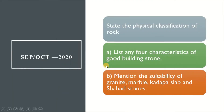In September-October 2020, the short answer is: state the physical classification of rocks — the same question again: stratified, unstratified, and foliated. The essay question is: list any 4 characteristics of good building stones, and mention the suitability of granite, marble, kadapa slab, and shabath stones.